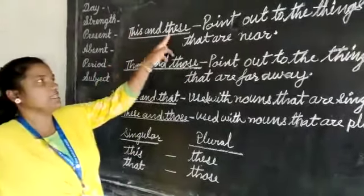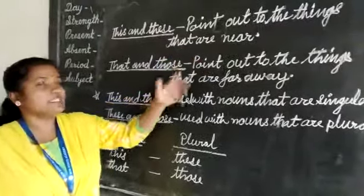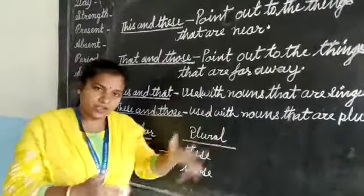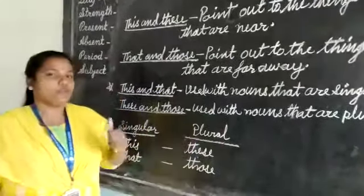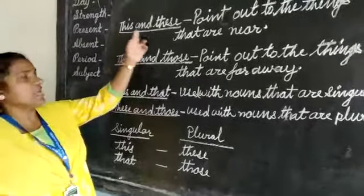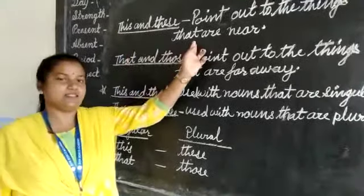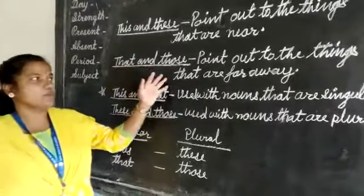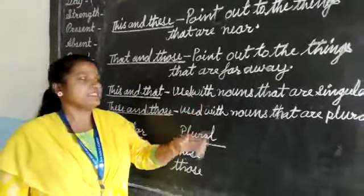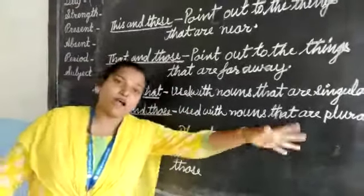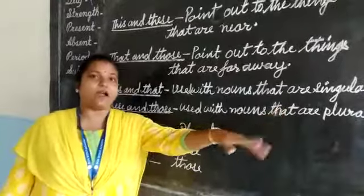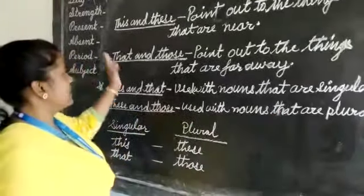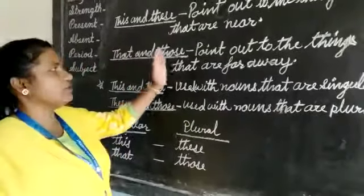This and these point out to the things that are near — the things which are near, we use the adjective this and these. Now, that and those point out to the things that are far, things which are very far or far away. We use the adjectives that and those.